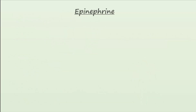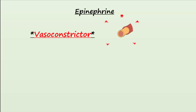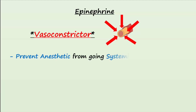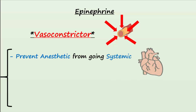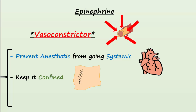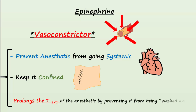Epinephrine is commonly administered with local anesthetics. It is a vasoconstrictor and constricts blood flow locally where the anesthetic was administered. This prevents the anesthetic from going systemic and affecting vital organs like the heart, keeping the anesthetic confined to the surgical area. The vasoconstriction also keeps the anesthetic from being washed away by the blood, prolonging the local anesthetic's half-life.